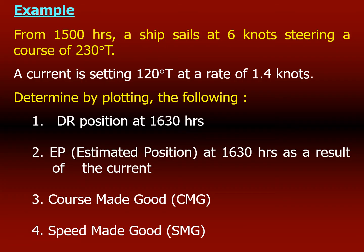Today's question says: from 1500 hours a ship sails at about six knots steering a course of 230 degrees true. The current is setting at 120 degrees true at a rate of 1.4 knots. You have to determine by plotting: first, the DR position (dead reckoning position) at 1630 hours — that's one and a half hours from now — and the estimated position (EP) at 1630 hours as a result of the current's effect, plus the course made good and the speed made good.